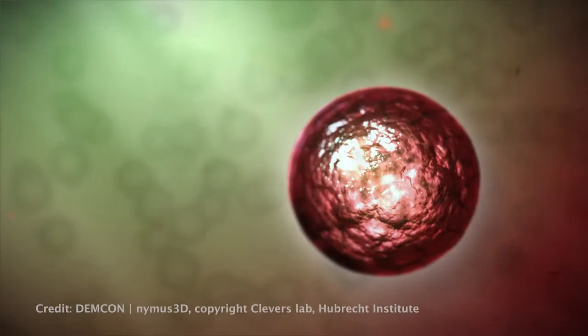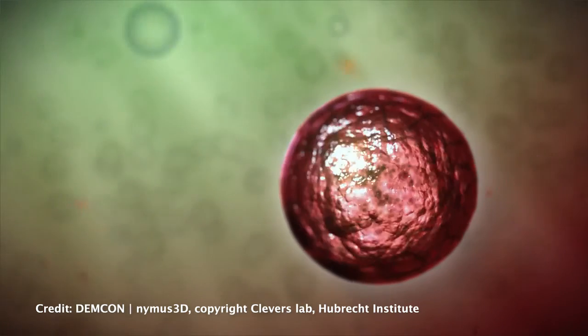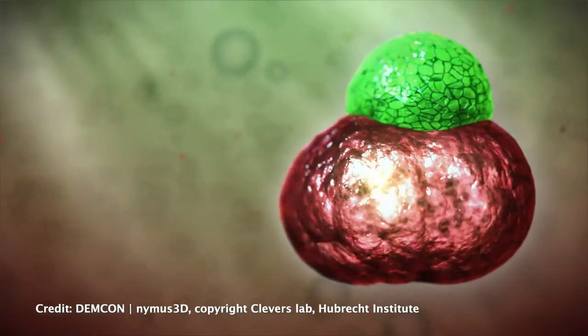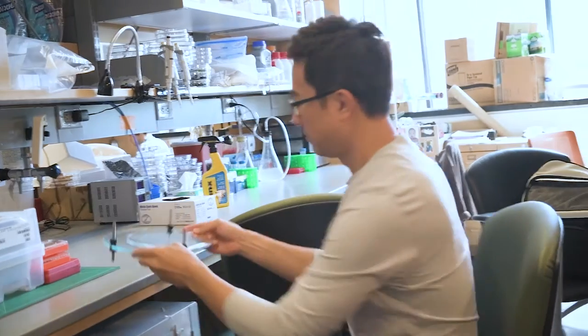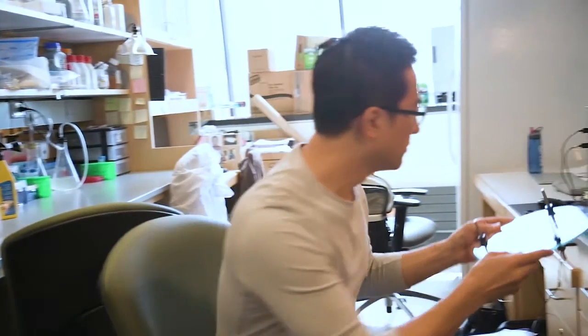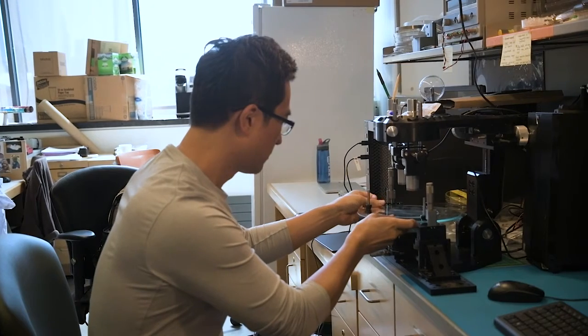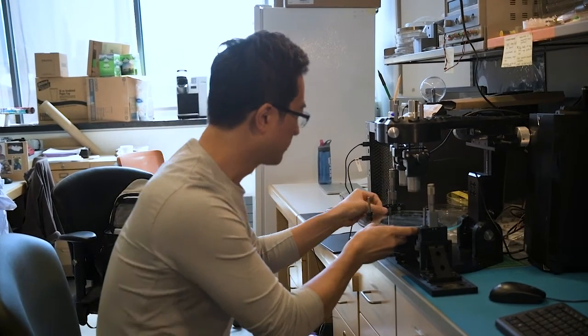And unlike organ-on-a-chip, which are heavily engineered man-made systems, organoids allow us to mimic the complexity of the human body in a more natural way. So organoids represent a more realistic model, but they have problems because they develop in a highly variable fashion, and it's not very easy to control their environment.